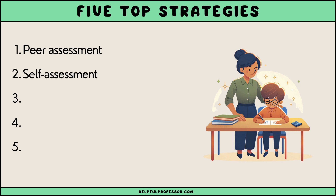Two: self-assessment. In self-assessment, students evaluate their own work. This builds self-monitoring and regulatory skills. For example, a teacher might provide students with a proforma and ask them to grade their own performance based on the performance prompts. Three: exit tickets. An exit ticket is a quick prompt given to students at the end of class asking them how the class went and what they still need help with. This is a great way to assess students' progress at the end of a lesson. Ideally, the information on the exit tickets will impact the teacher's planning for the subsequent lesson.